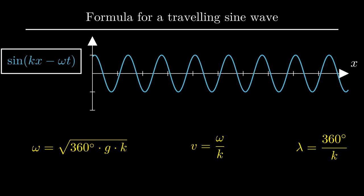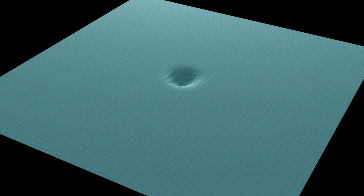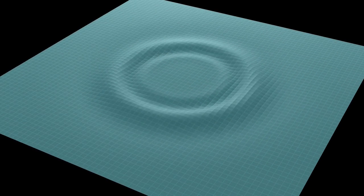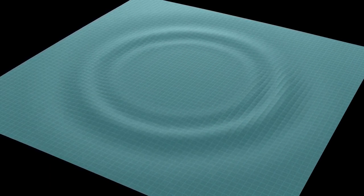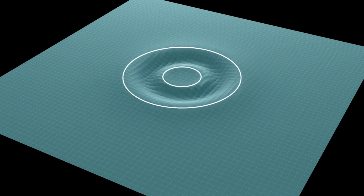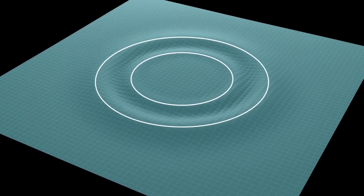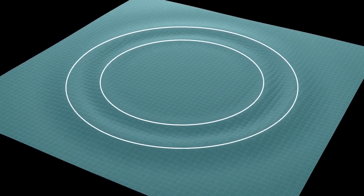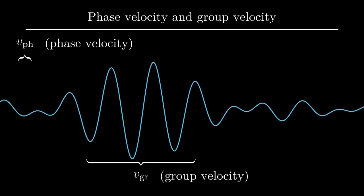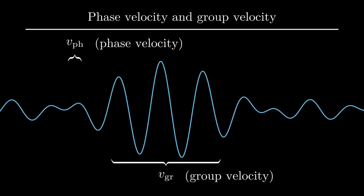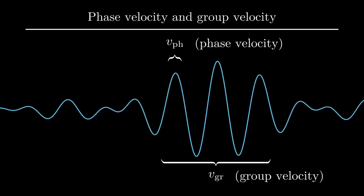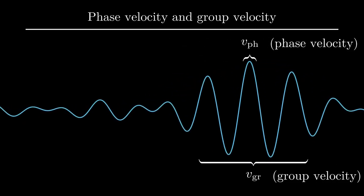Now let's have another look at the circular waves. Unlike the sine waves we just saw, the crests are not moving with the same speed as the waves as a whole. Crests seem to appear at the back of the group, then overtake the group and disappear at the front. The speed of the individual crests is called the phase velocity, and the speed of the group as a whole is called the group velocity. They are different, because the wave we are looking at is not a single sine wave, but a superposition of many of them.